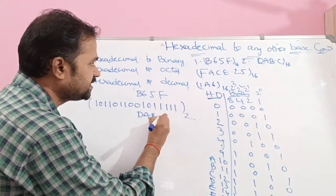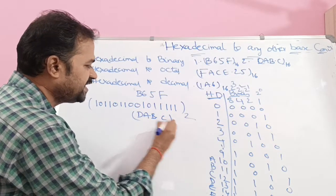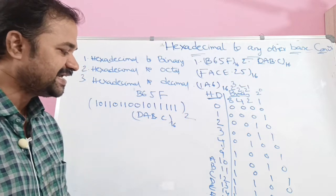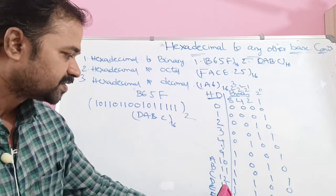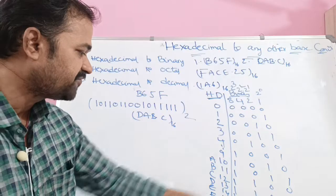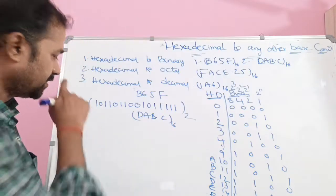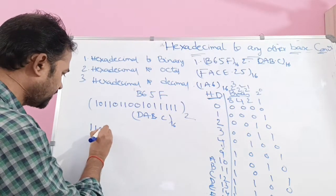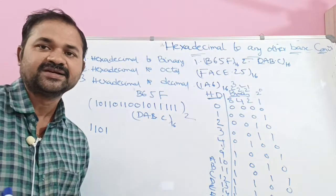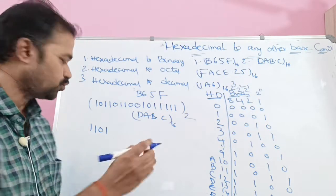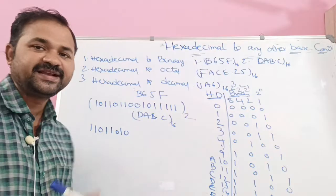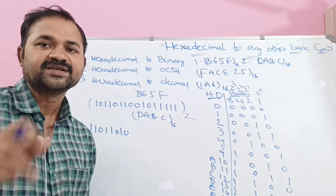The second problem is DAB.C base 16. D means 13, which is sum of 8, 4, and 1, giving 1101. A means 10, sum of 8 and 2, giving 1010. B means 11, sum of 8, 2, and 1, giving 1011.